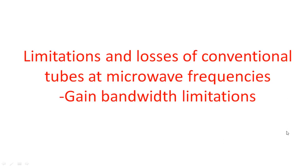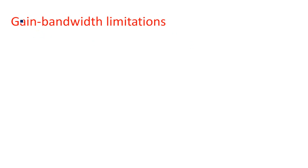In this video I'm going to explain another type of limitation of the conventional tube at microwave frequencies, which is the gain-bandwidth limitation — or gain-bandwidth product — and how it limits the performance of conventional tubes at microwave frequencies. Gain is output divided by input; gain and bandwidth are inversely proportional to each other. As gain increases, bandwidth decreases, and vice versa. Bandwidth is the range of frequencies for which the gain is constant.